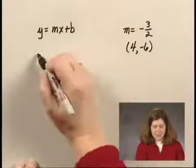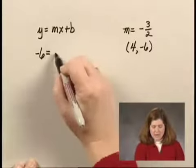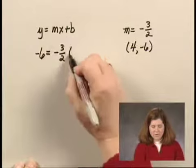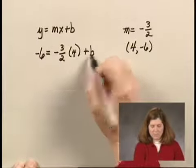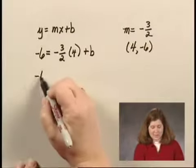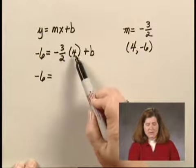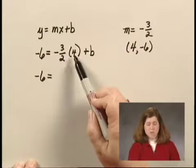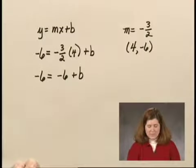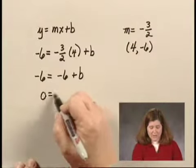Substituting -6 for y, -3/2 for m, 4 for x, and then plus b, we now solve for b. Well, we have -6 equals -3/2 times 4, which is -12/2, which is -6, plus b. Adding 6 to both sides of the equation, we have 0 equals b.